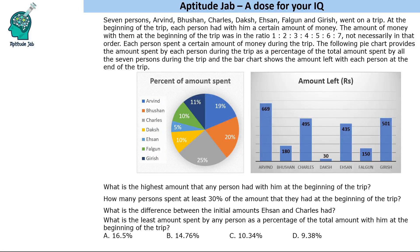Each person spent a certain amount of money during the trip. The pie chart shows the percentage of the total amount spent by these people, and the bar graph shows the amount left with each person. The initial money was in the ratio 1:2:3:4:5:6:7.